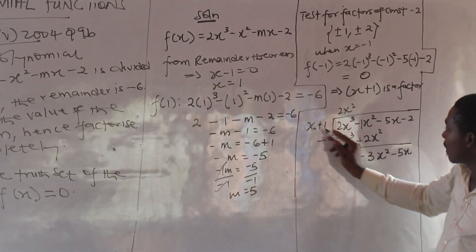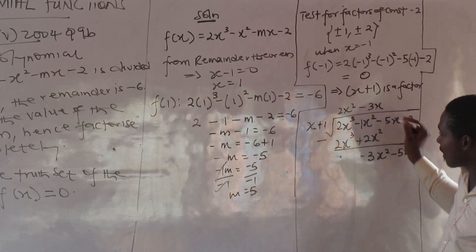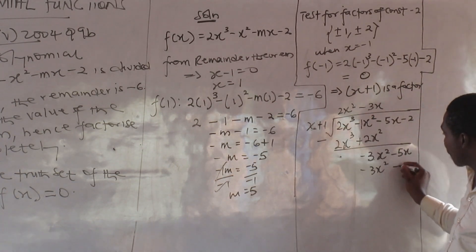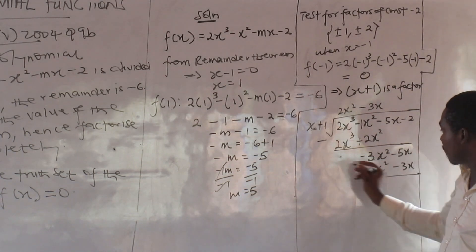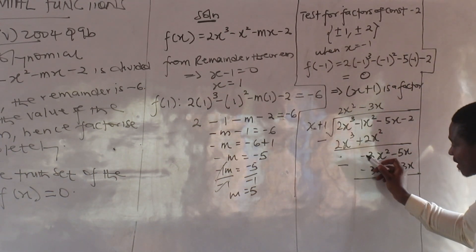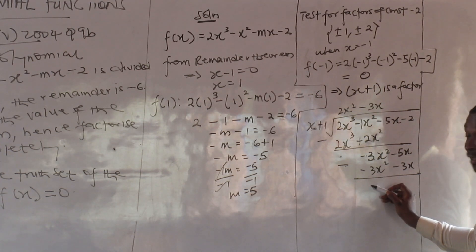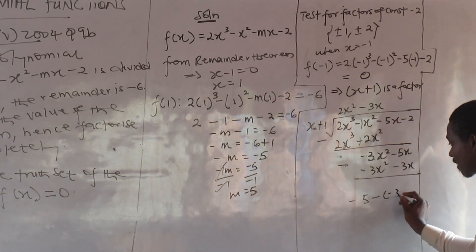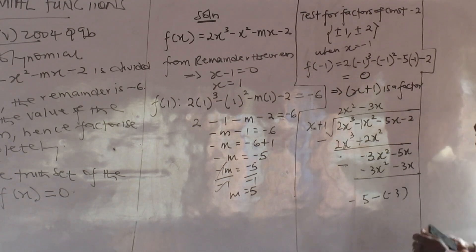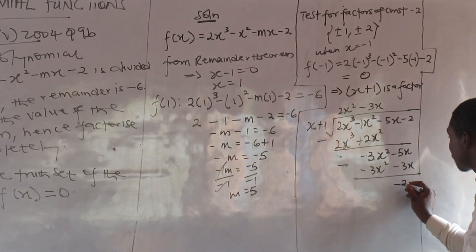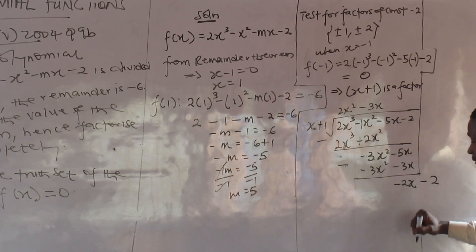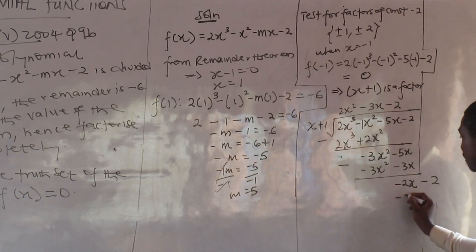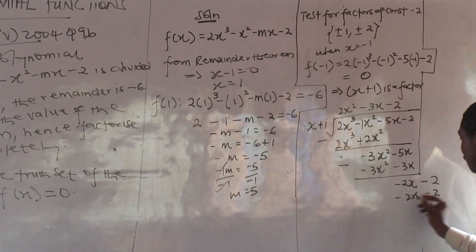Continuing: minus 3x squared divided by x gives minus 3x. Minus 3x times x gives minus 3x squared. Minus 3x times 1 gives minus 3x. After subtraction: minus 5x minus negative 3x gives minus 2x. Bringing down minus 2. Minus 2x divided by x gives minus 2. Minus 2 times x gives minus 2x. Minus 2 times 1 gives minus 2. Remainder is zero.